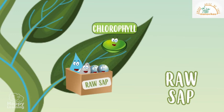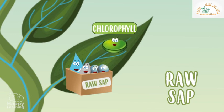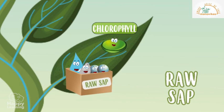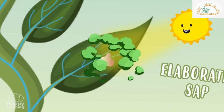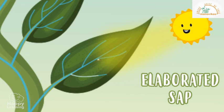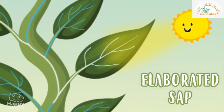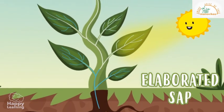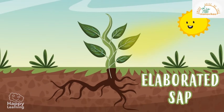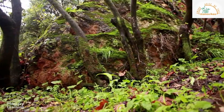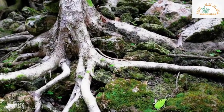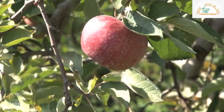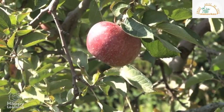Now it's chlorophyll's turn. The chlorophyll in the leaves has all the necessary ingredients for photosynthesis. When it receives sunlight, the process begins, transforming the raw sap into elaborated sap, which circulates around the plant and works as food. Plants feed from the elaborated sap and store it in their roots, like carrots, or in a fruit, like an apple or pear.